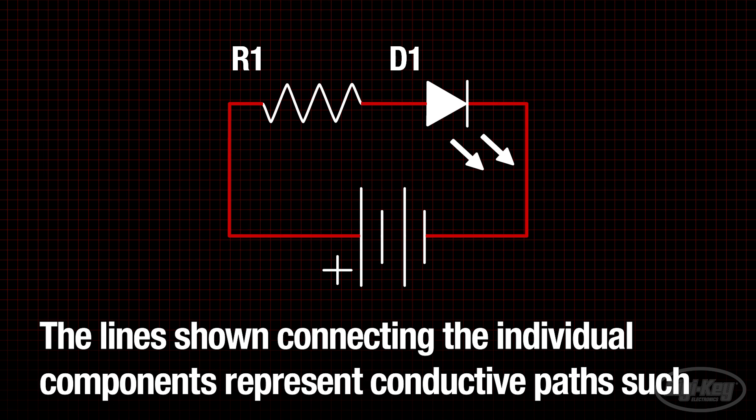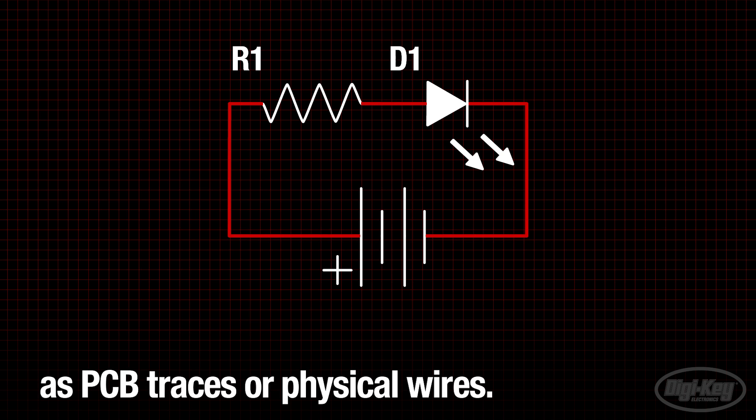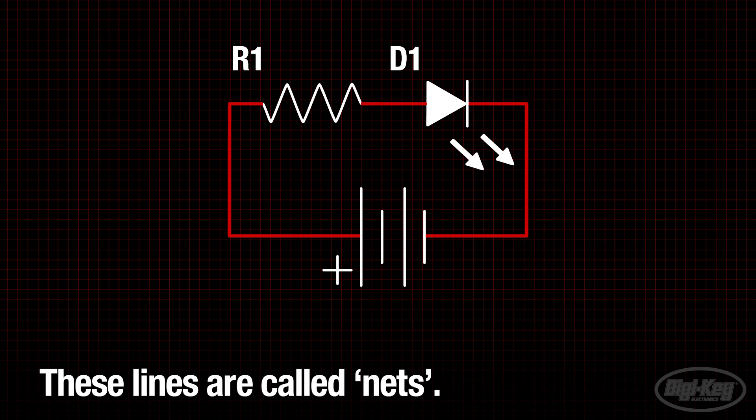The lines shown connecting the individual components represent conductive paths such as PCB traces or physical wires. These lines are called nets.